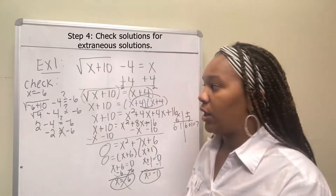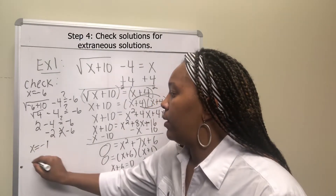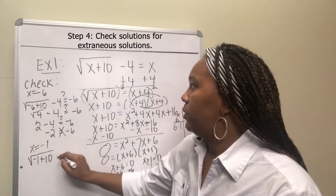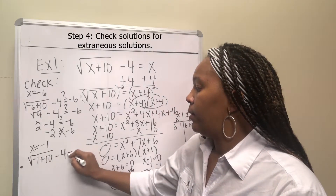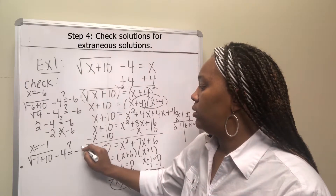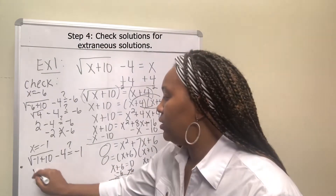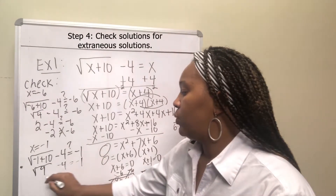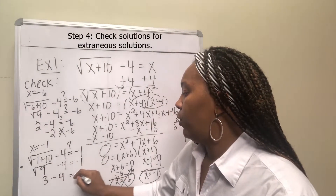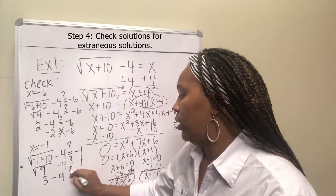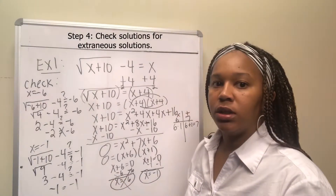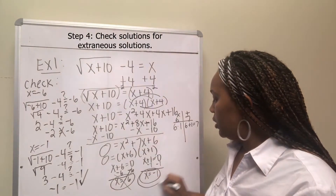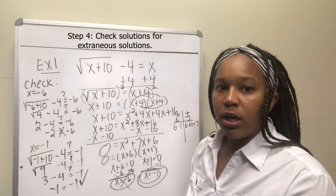Now checking negative 1 in the original equation: negative 1 plus 10 is 9, so we have the square root of 9 minus 4. The square root of 9 is 3, and 3 minus 4 is negative 1. Negative 1 equals negative 1, so this checks out. The only solution is x equals negative 1.